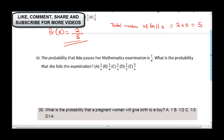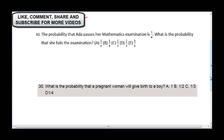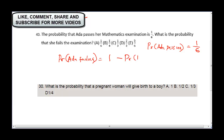The next question says: the probability that Adaeze passes her mathematics examination is one over six. What is the probability that she fails her examination? If the probability of Adaeze passing is one over six, then the probability of Adaeze failing will be one minus the probability of Adaeze passing, which is one minus one over six.